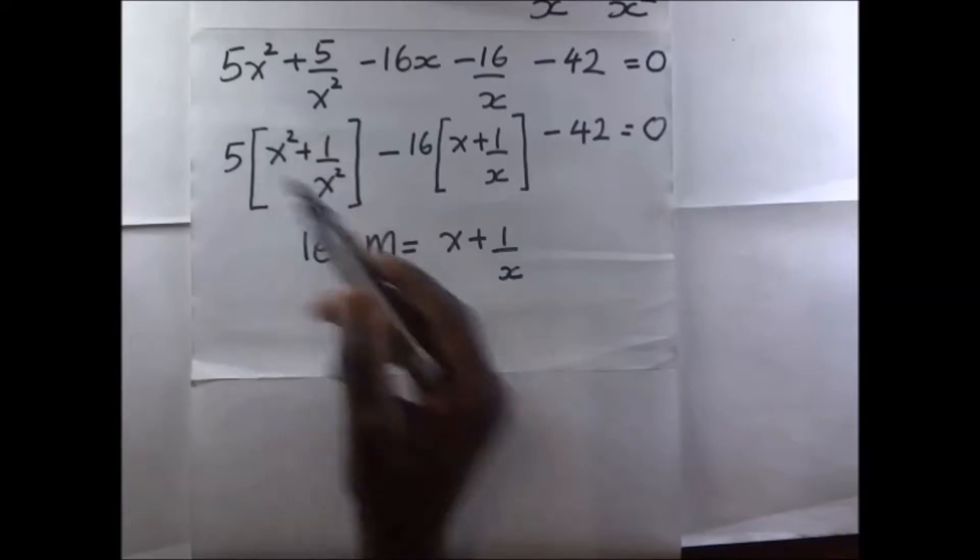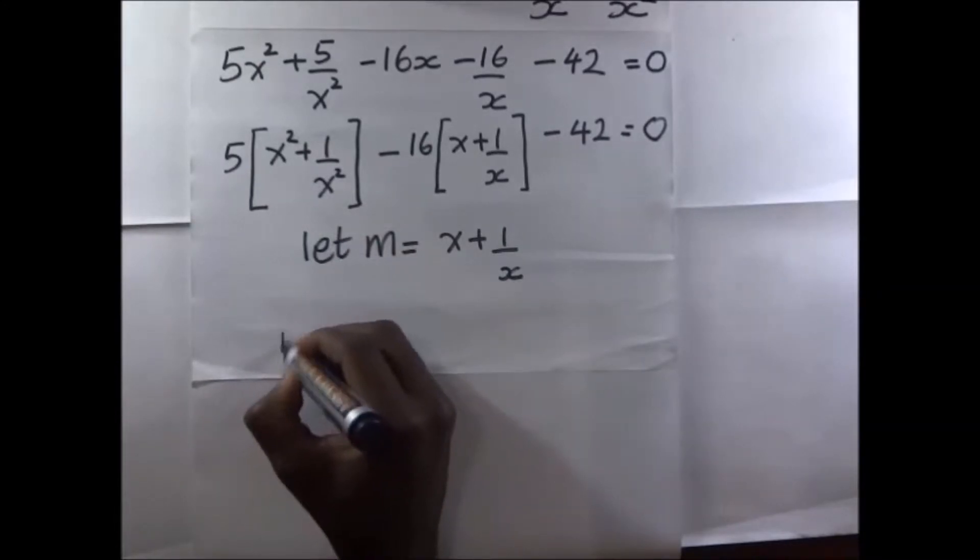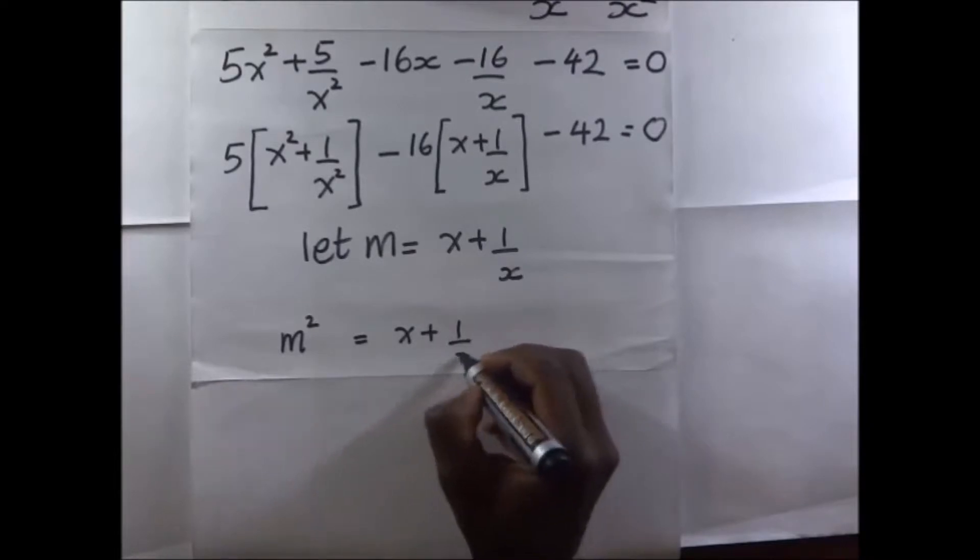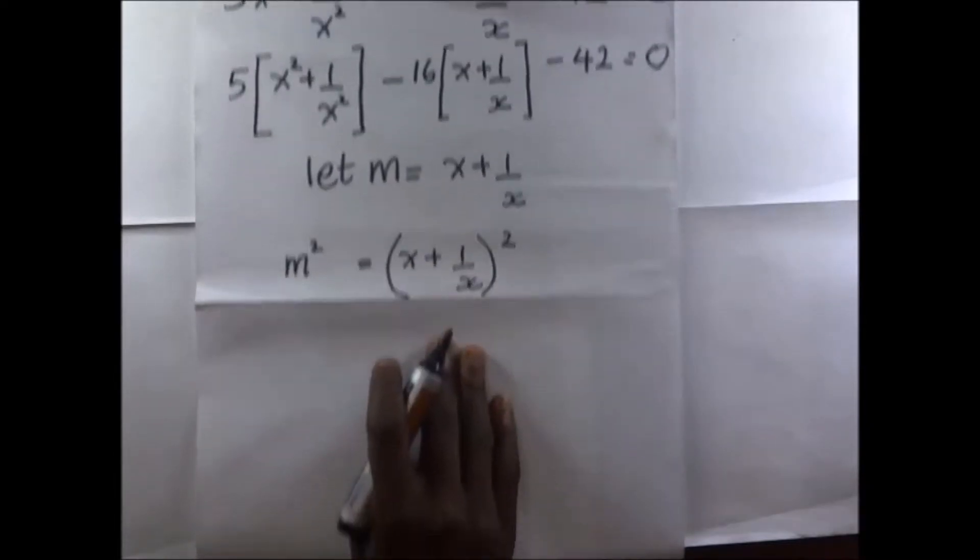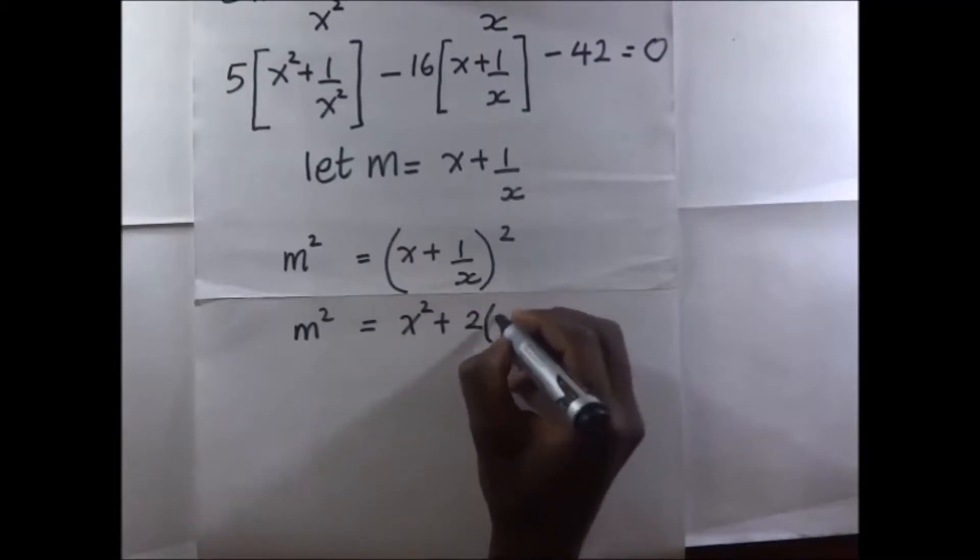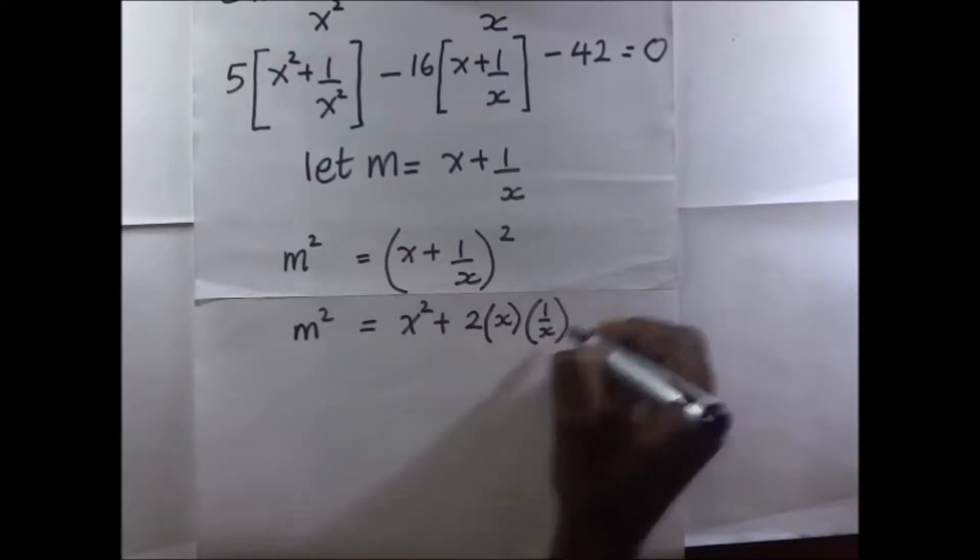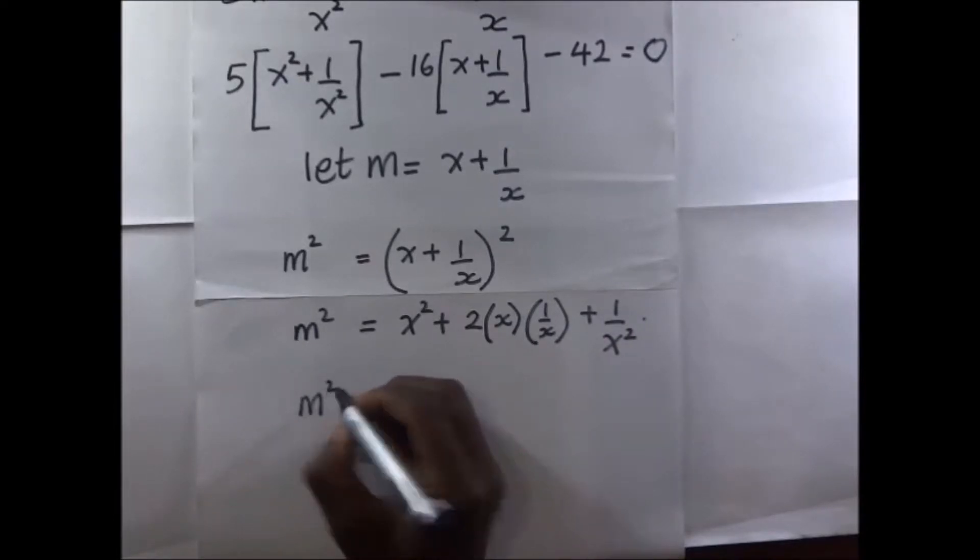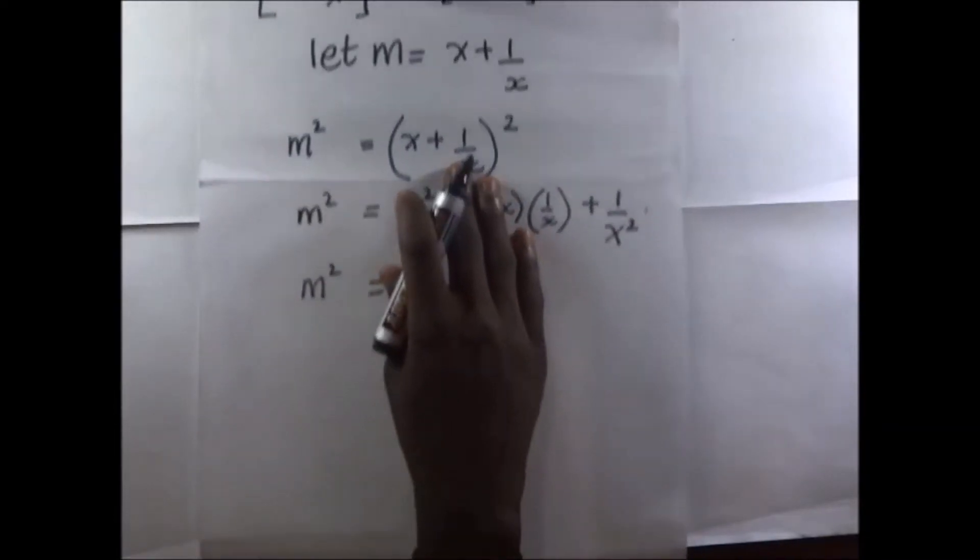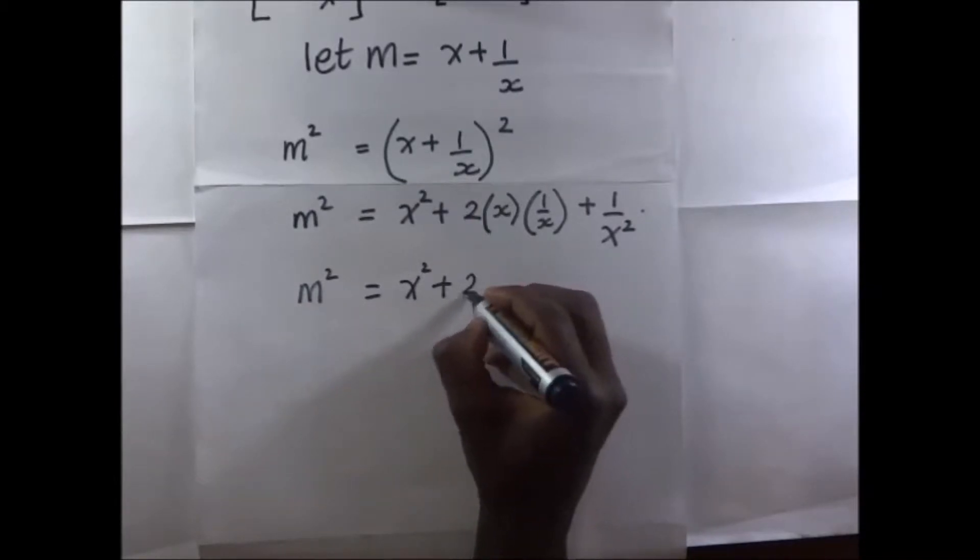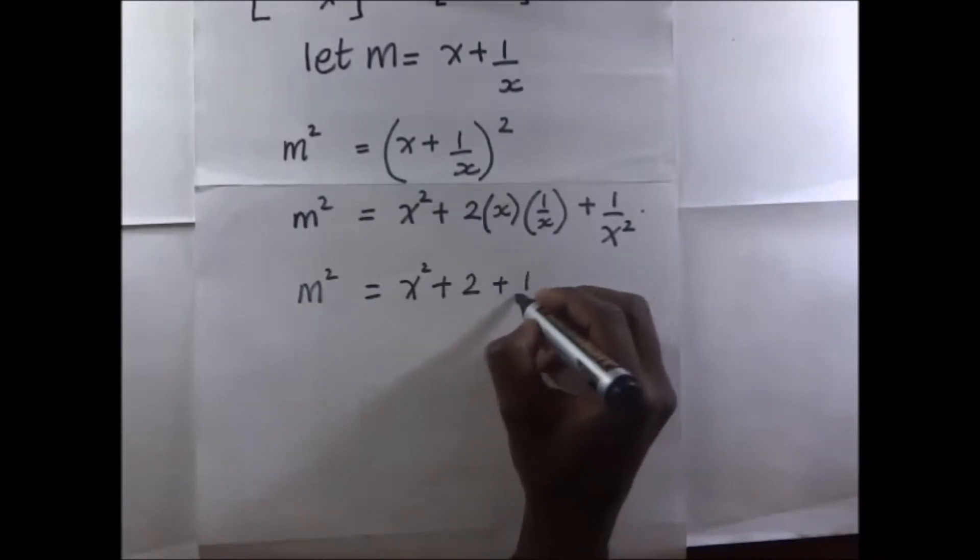Now what about this? Let's try and square M. M squared will be equal to... M is equal to x plus 1 over x. So meaning that M squared is going to become x squared plus 2 plus 1 over x squared.